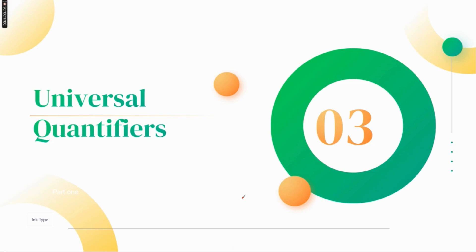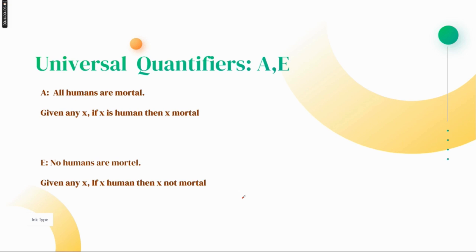Now moving to the next topic, we have universal quantifiers and then existential quantifiers. Universal quantifiers — as we talked about, we have propositions of four categories: A propositions, E propositions, I propositions, and O propositions. We'll be talking about just A and E in universal quantifiers.